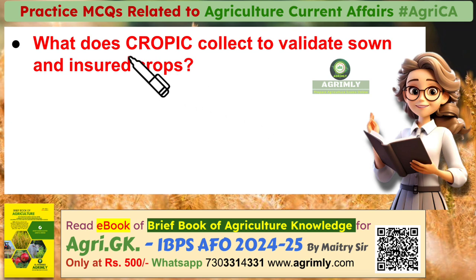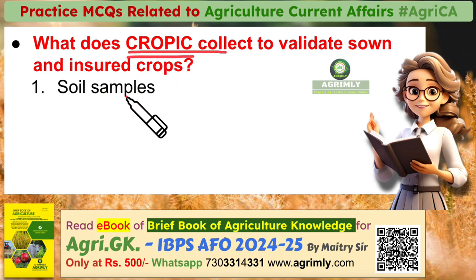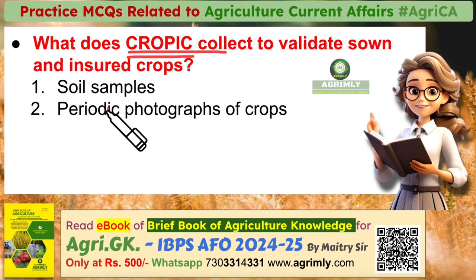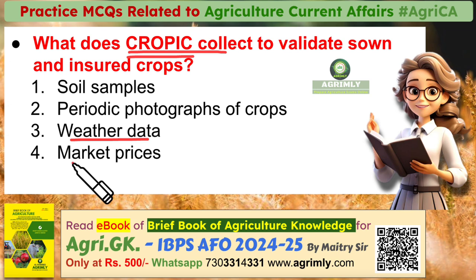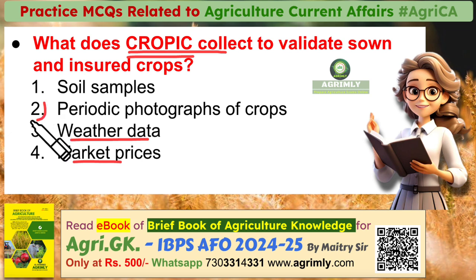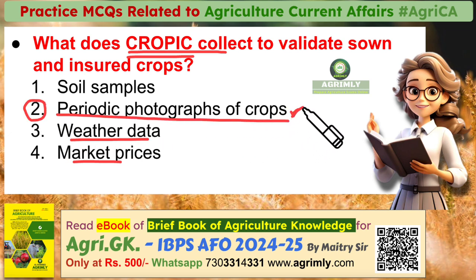Question four: What does Crop Information and Communication (CROPIC) collect to validate sown and insured crops? Options: soil samples; periodic photographs of crops; weather data; or market prices. The correct answer is periodic photographs of crops. CROPIC collects periodic photographs of crops to validate the area sown and ensure that insured crops are accurately monitored throughout the growing season.